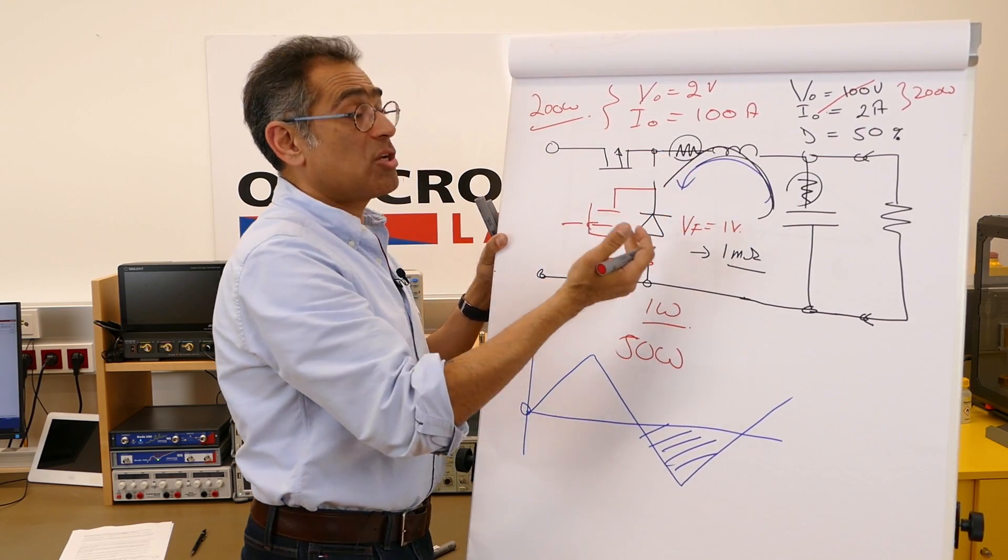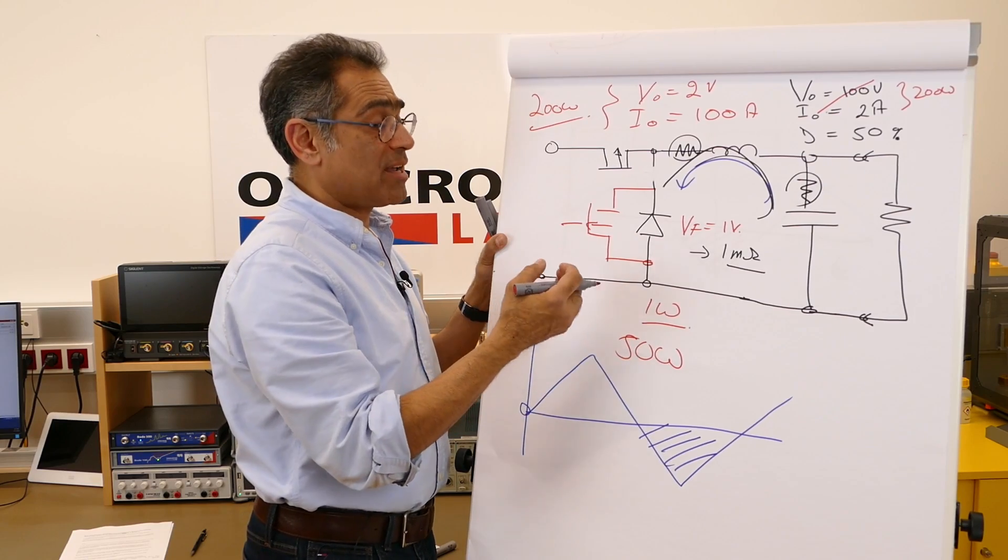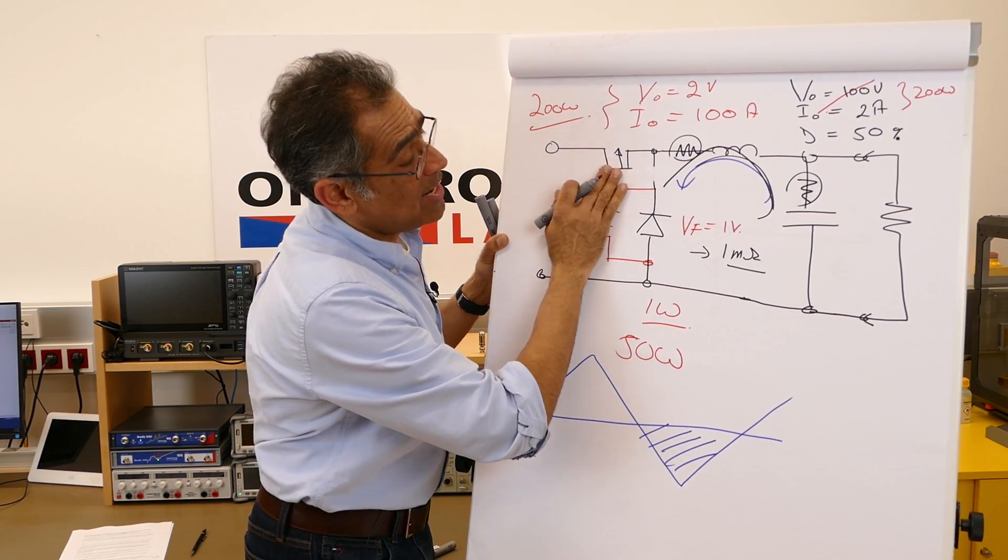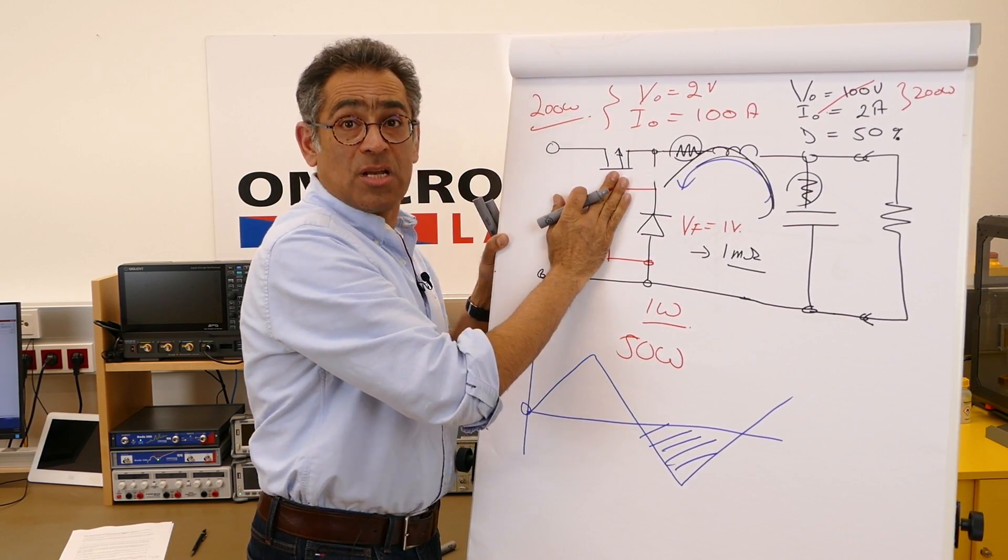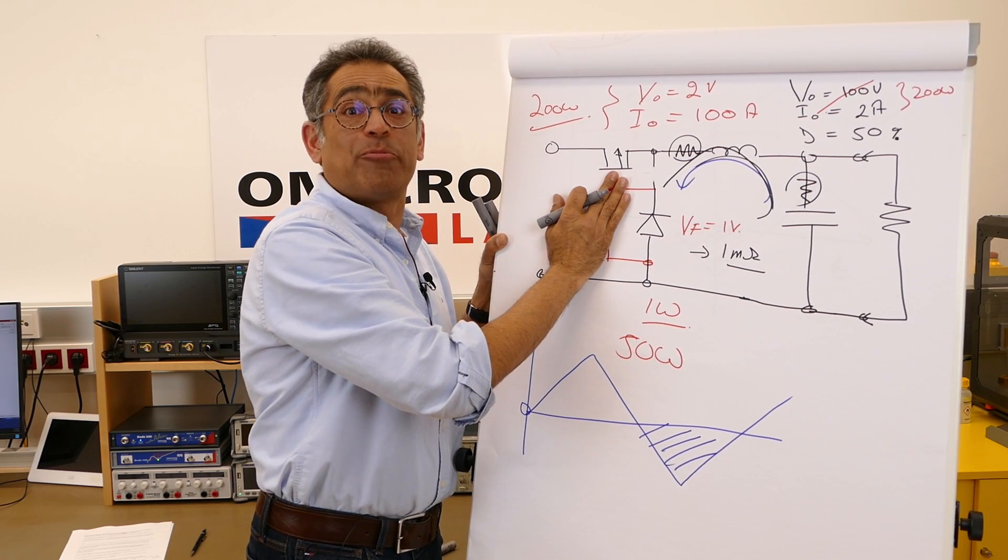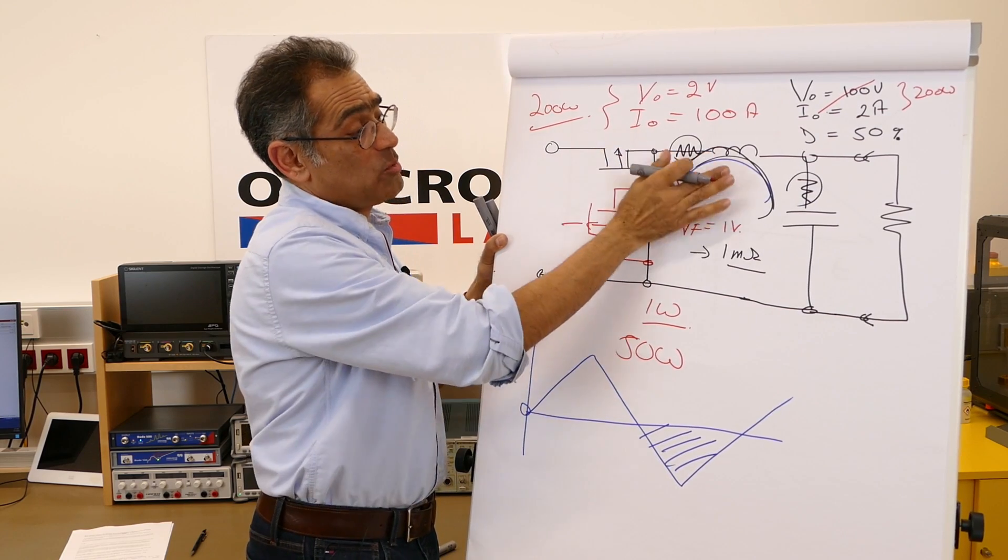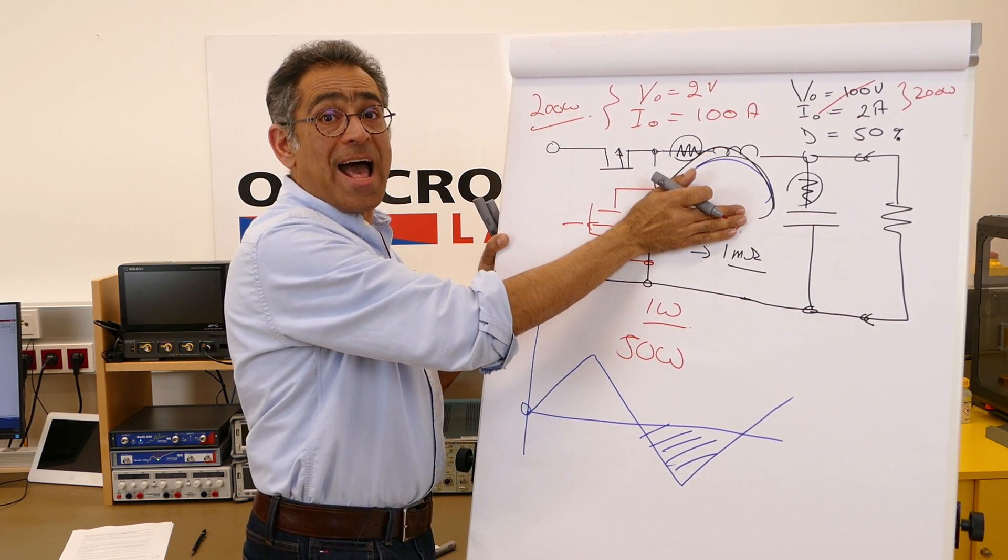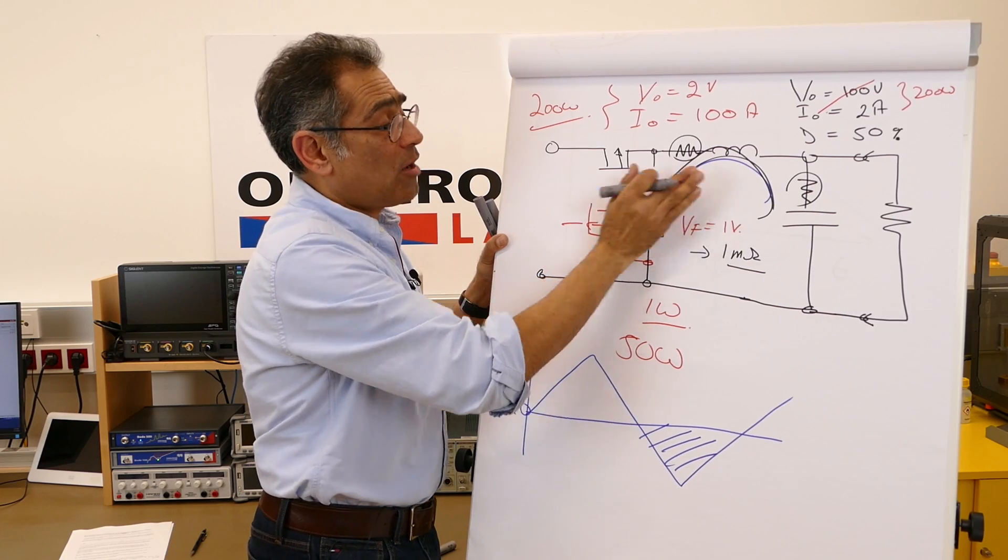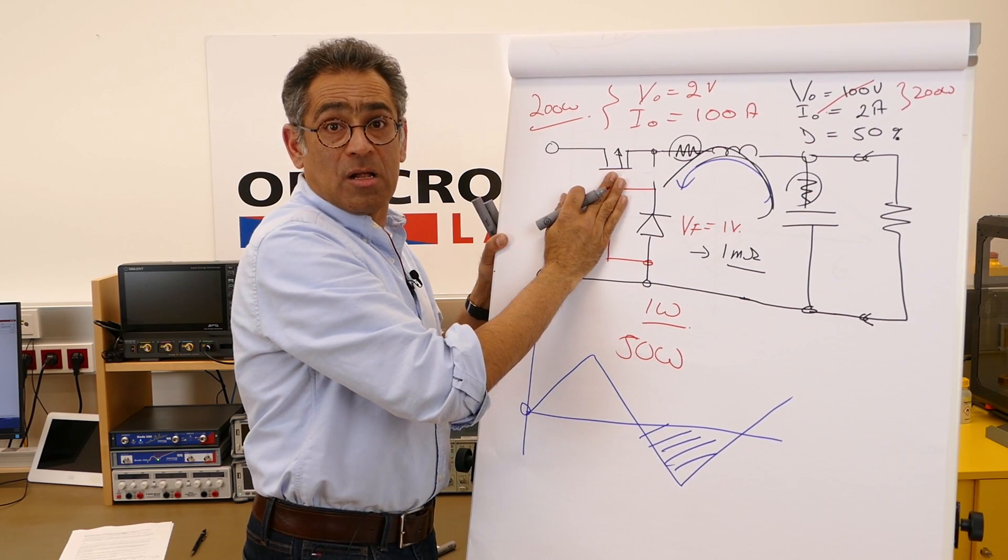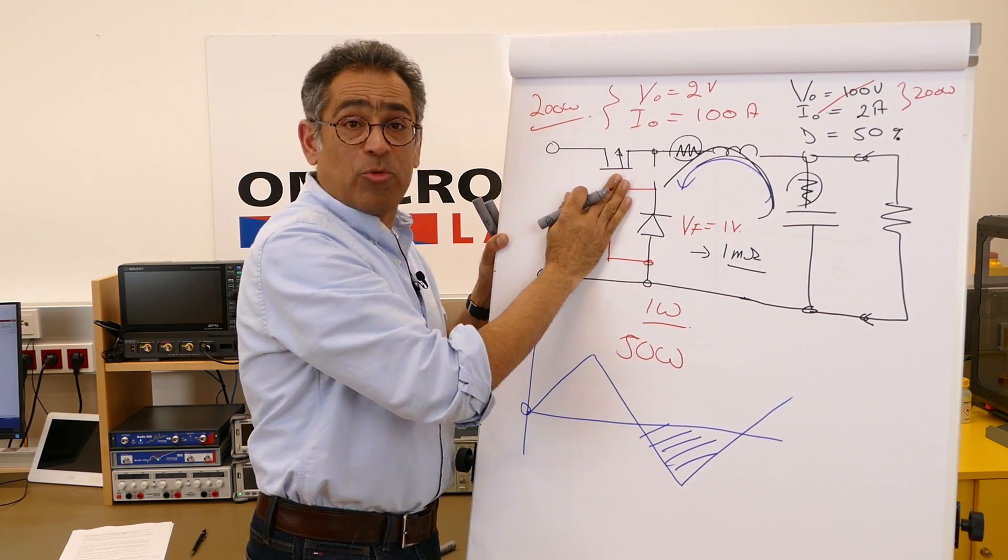When the current gets low enough, the controller recognizes this and stops switching this. And then you end up with just a normal buck. And therefore, you kind of get the best of both worlds, in that you get high efficiency during high currents, because you're in synchronous switching, and high efficiency at low currents during the diode emulation mode.